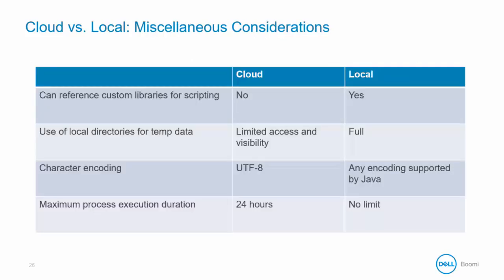Finally, here are some miscellaneous considerations. If you need to make use of any custom libraries for scripting, that is available only in a local deployment. If you need to make use of local directories for temp data, that also is mostly only available in a local deployment, as the cloud has very limited access to local directories. Character encoding in the cloud is UTF-8; in a local deployment, it is any encoding supported by Java. The maximum process execution duration is 24 hours in the cloud, whereas on local, there is no limit to how long a process can run.